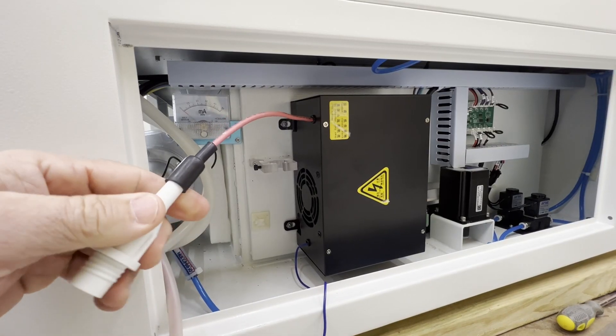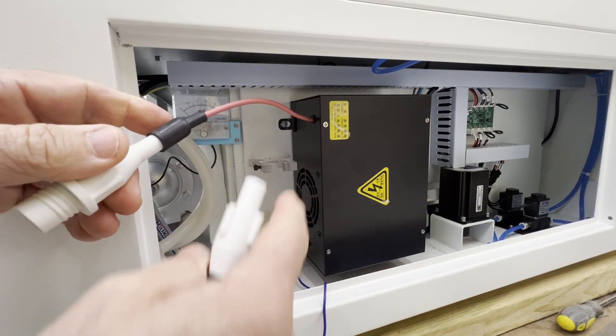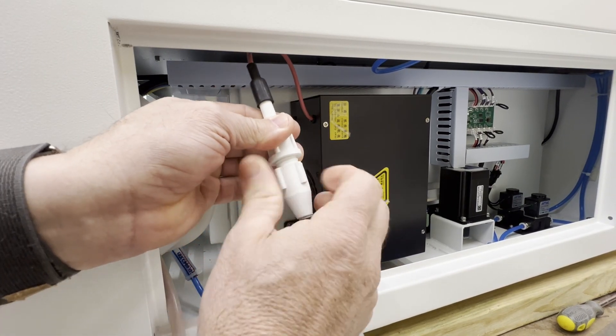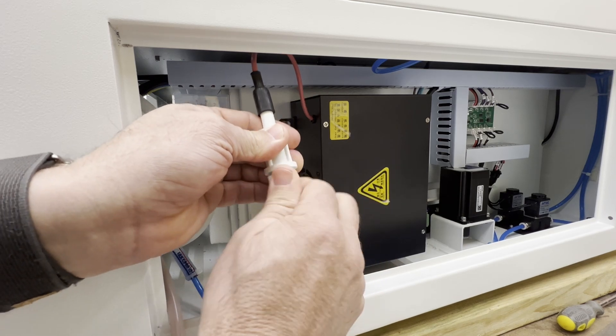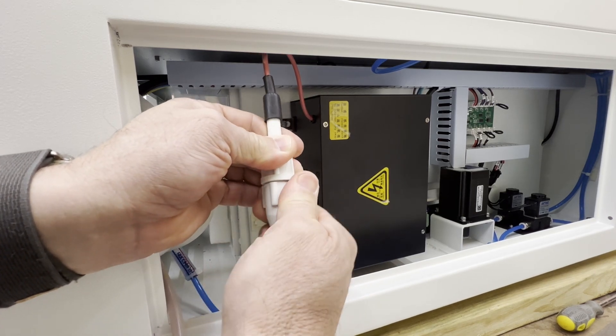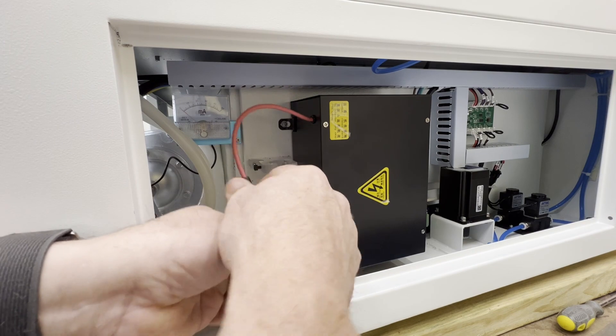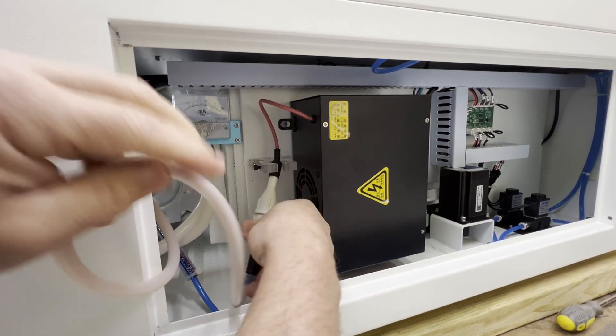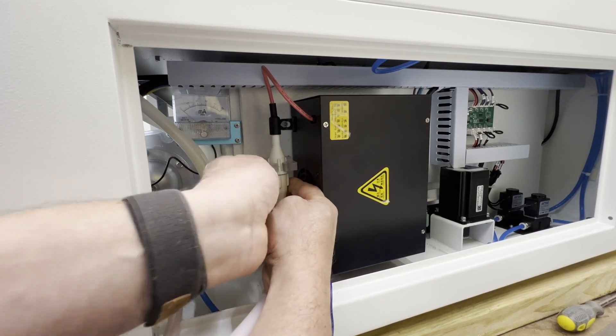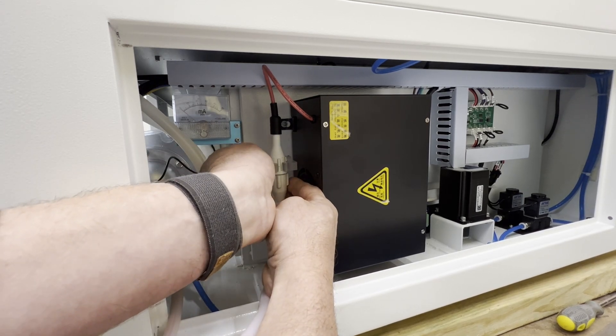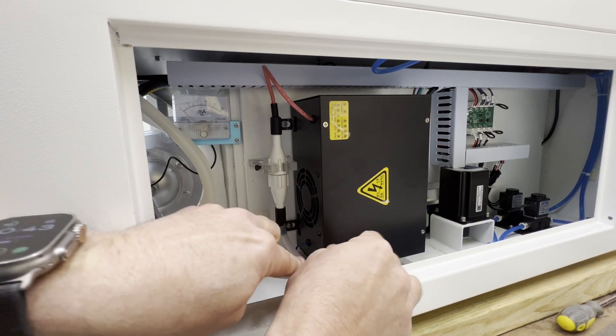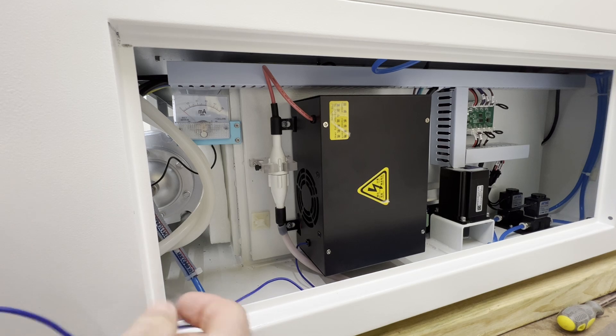All right, once you have your three screws in and the LPSU mounted, we'll take our high voltage connector, plug that in, screw it down nice and tight, hand tight. Take your white cord and kind of slide it up in there, and then you can tighten this little allen screw down so it stays where we want it to in the acrylic holder.